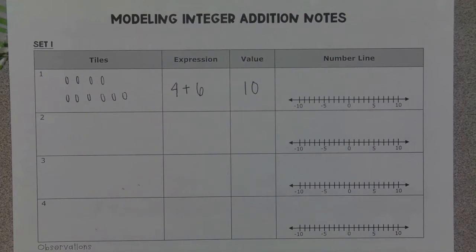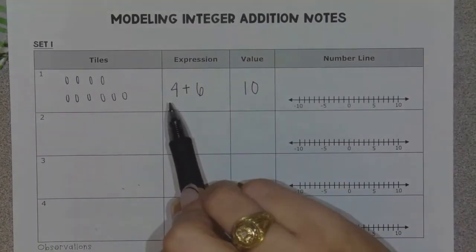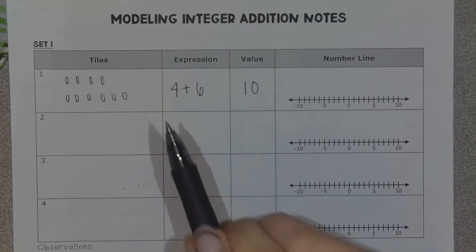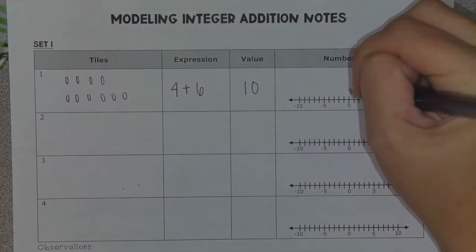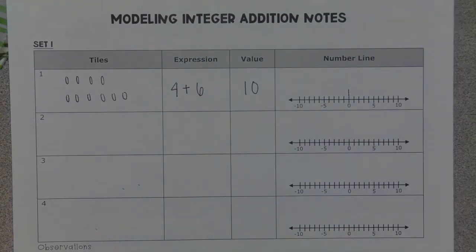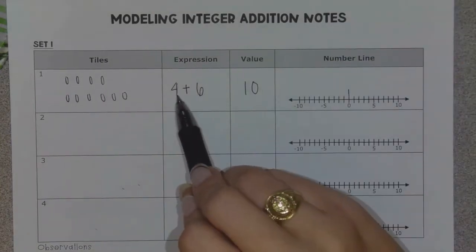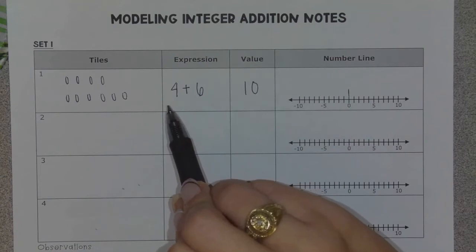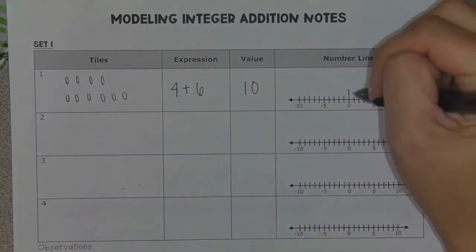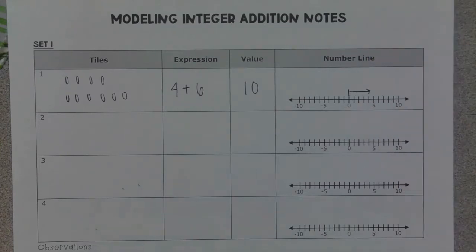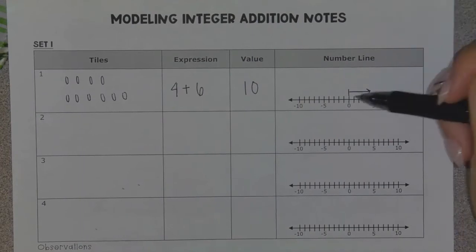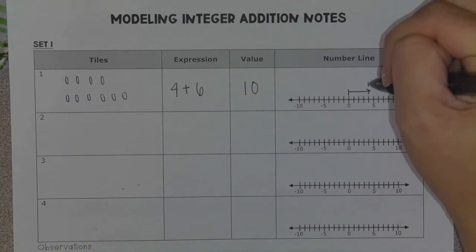What our number lines look like when we do integer addition: you're always going to start with the very first number in your adding expression. My very first number is positive four. I always start my number line at zero, so I'm going to draw a straight up-and-down line at zero. Since four is positive and positive numbers go to the right, I'm going to move and draw a line that goes four spaces to the right, and put an arrow at the very end. That shows a positive four.